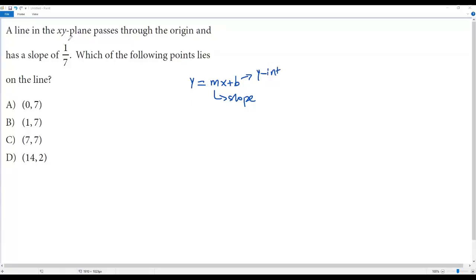The slope is given in the question as 1/7, so we can plug in this value for m. Then we get y = (1/7)x.